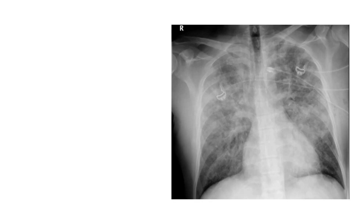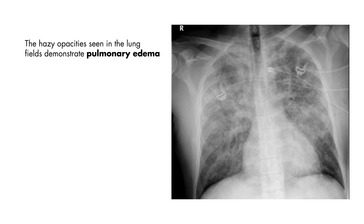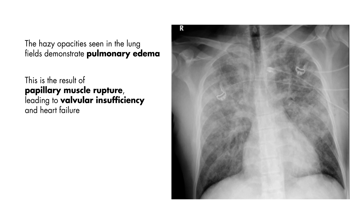In this case, this patient also complains of shortness of breath and his chest x-ray reveals a large amount of pulmonary edema. This is likely the result of the papillary muscle rupture, leading to mitral regurgitation and eventual heart failure.